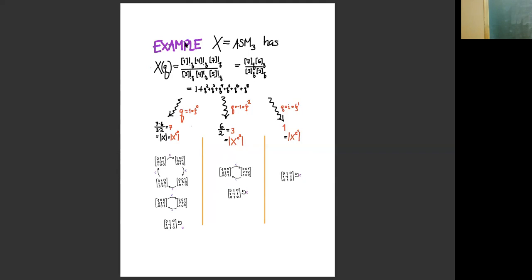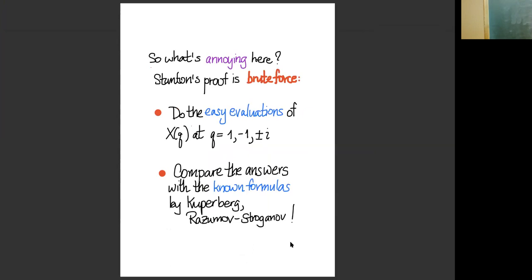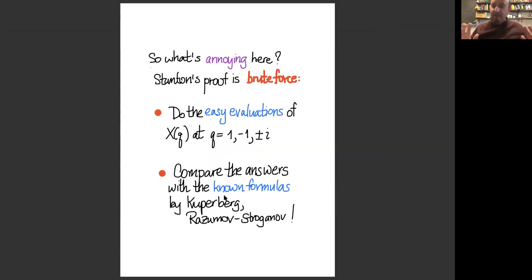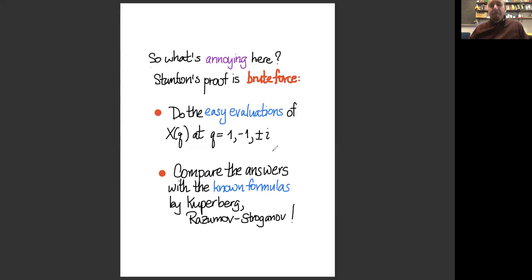The bad thing—what's annoying—is the proof: it's brute force. We know how to evaluate the product formula at 1, -1, and ±i, and we had the answers already from Kuperberg and from Razumov and Stroganov, so Dennis sat down and compared them and checked they were the same. This is why it's not a published paper—it's in an REU report. It would be nicer to have an insightful proof, and I'd like to tell you what I mean by a good proof.